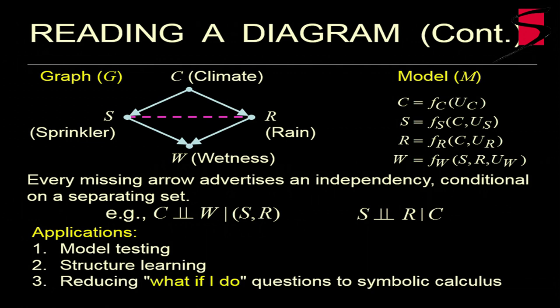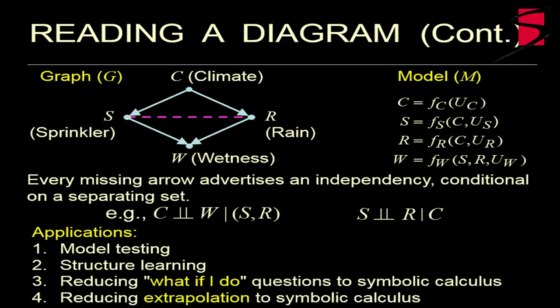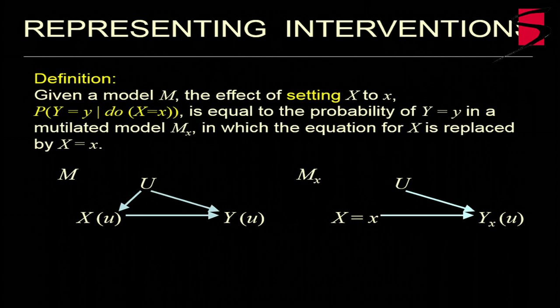You can reduce questions of causal nature, like what if I do, to symbolic manipulation. Symbolic calculus. Third, you can reduce extrapolation problems that I started to present, also to symbolic calculus. Here is representing intervention and counterfactual. I assume you don't take notes now. You can all read it in the references I gave in my abstract. Just smell the flavor of what we can do and what needs to have special attention. Counterfactual is easily represented in that mode.